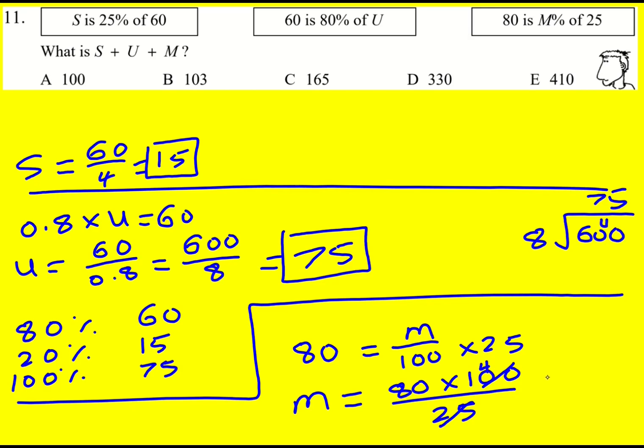80 times 4 is 320, that's our third number. Okay, so overall, got 15 plus 75 that gives 90, plus 320 gives 410. Nice question.